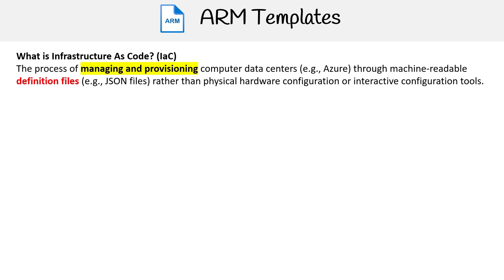Hey, this is Andrew Brown from ExamPro and in this segment we'll be diving into ARM templates. So what exactly is Infrastructure as Code? Infrastructure as Code is the process of managing and provisioning computer data centers such as those in Azure using machine-readable definition files like JSON files, rather than depending on physical hardware configuration or interactive configuration tools.